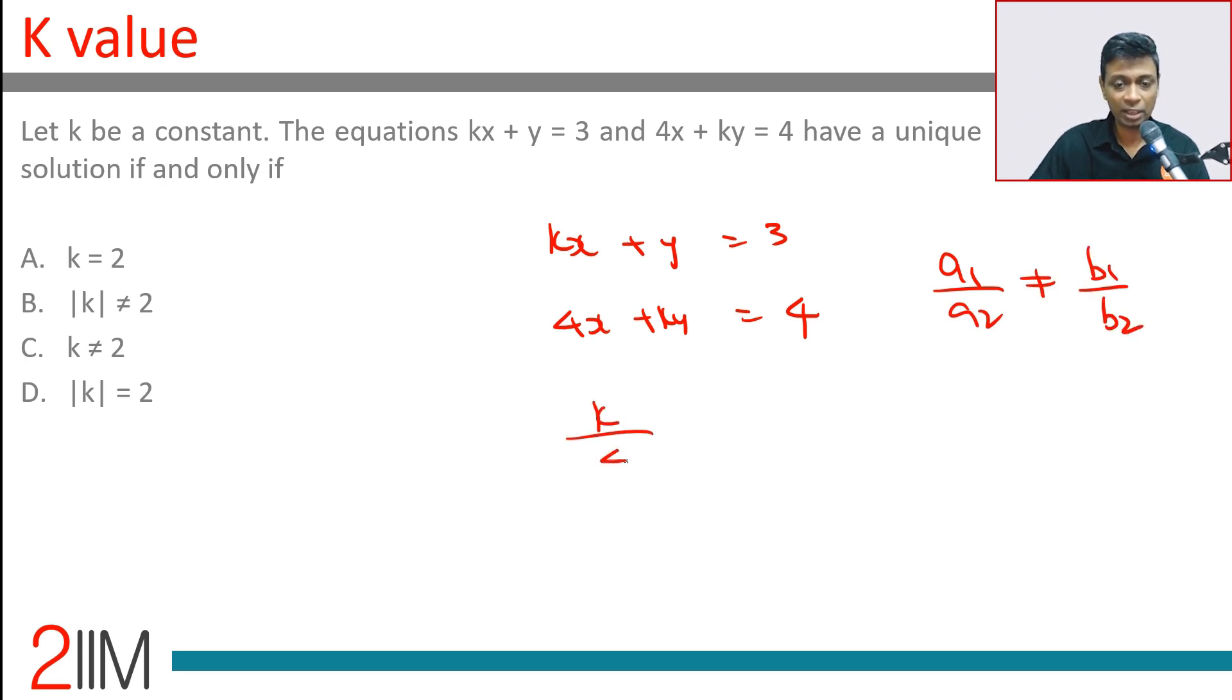k by 4 is not equal to 1 by k. k square is not equal to 4. k should not be equal to plus or minus 2, or modulus of k not equal to 2.